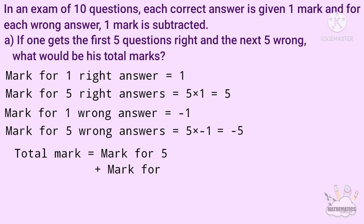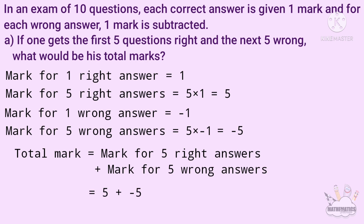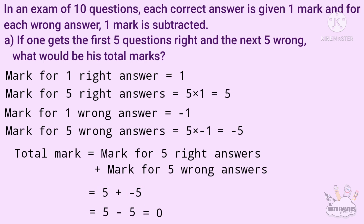The total mark is mark for 5 right answers plus mark for 5 wrong answers, that is 5 plus minus 5. This is a positive number and a negative number of equal value, so 5 minus 5 is 0.